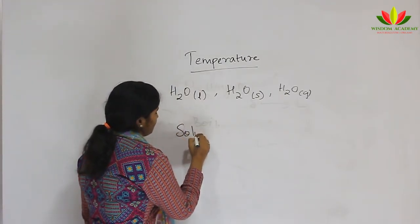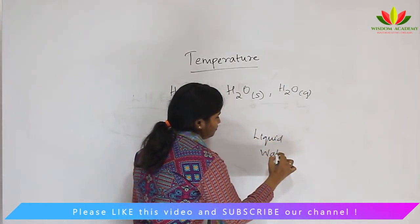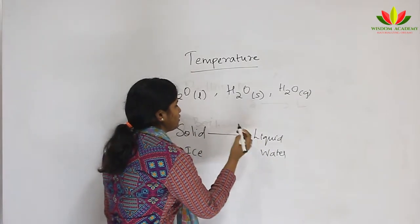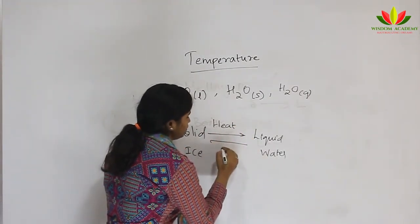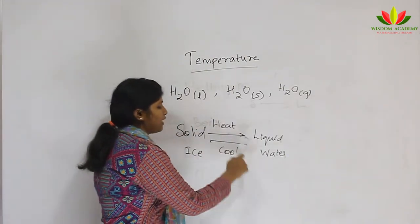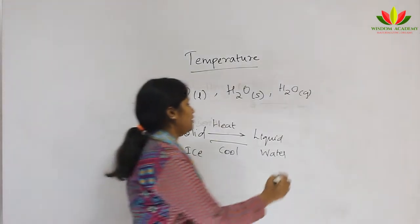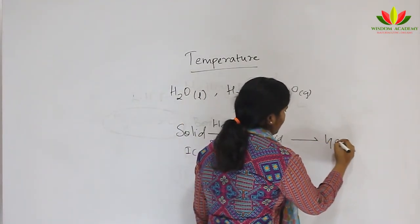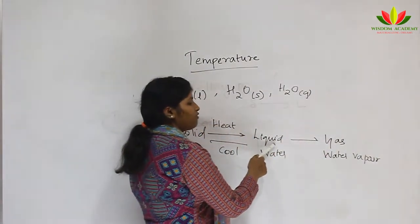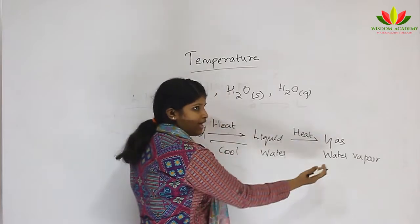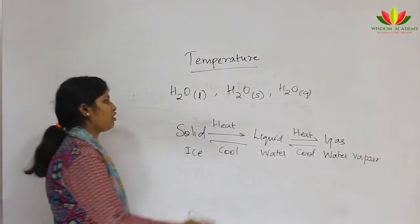Taking solid ice to liquid water: to convert ice to water we apply heat, and to convert water back to ice we cool it. Similarly, liquid is converted to gas by heating, and gas is converted back to liquid by cooling. So these are the effects of temperature on the three states of matter.